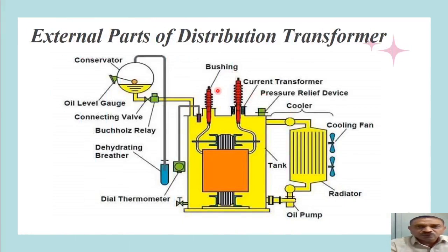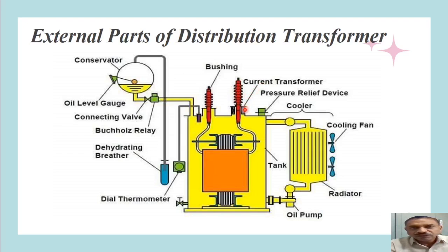Now let us see all the external parts of a distribution transformer. Whatever parts we described earlier are contained in a box — the whole transformer is mounted inside a tank filled with oil, represented by yellow color. At the top, the tank is provided with bushings, through which we connect the primary and secondary windings. Depending upon voltage level, the size and height of the bushings will vary. A current transformer is fitted near the bushings, which takes care of measurement and protection. It steps down the current of primary or secondary windings to a level accepted for measurement and protection.